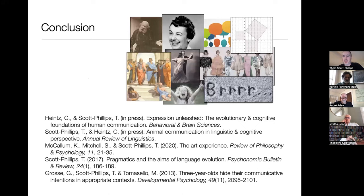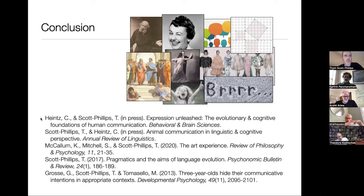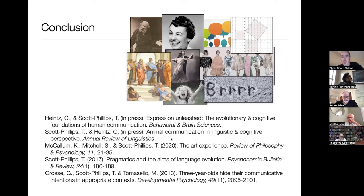I've possibly gone a bit quicker than I intended, but these are the key papers I've summarized today that touch on the themes I've talked about. The evolutionary dimension — great ape social cognition and forms of attention manipulation — I haven't elaborated on today, but certainly can do so in the Q&A. I think the evolution of this cognitive unity is connected to great ape social cognition, and that's a point we elaborate in a new forthcoming paper. The bigger ideas are in our BBS paper. Looking forward to the questions.